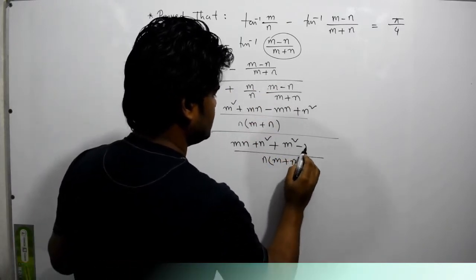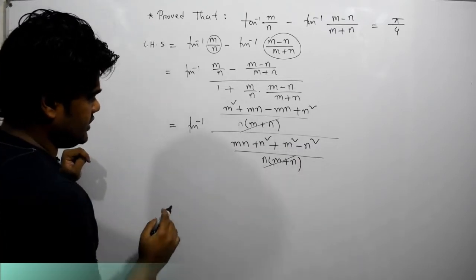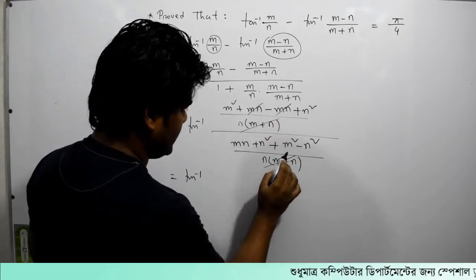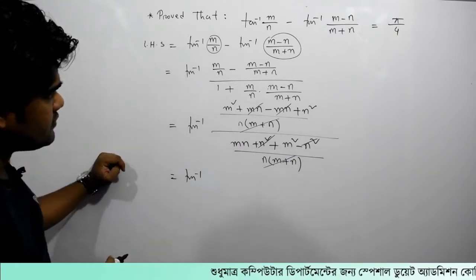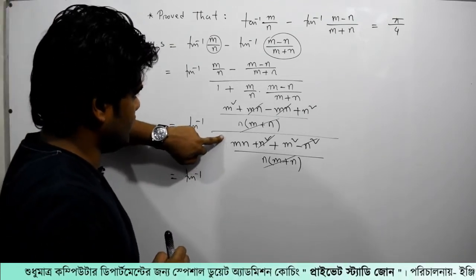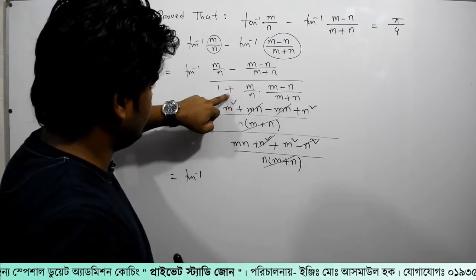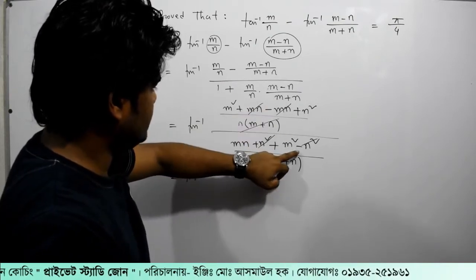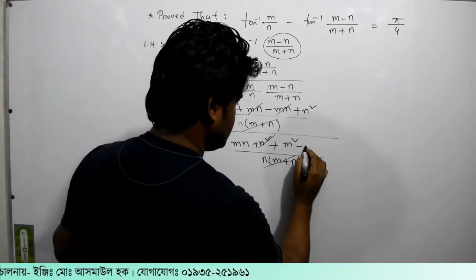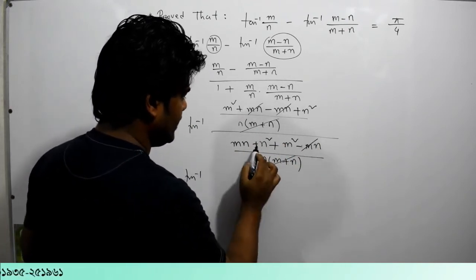We get m squared minus n squared. Let's see how much it is. So now we get the inverse, and there are n squared and n squared terms. We write n squared plus n squared — this simplifies further. We have m squared, then m·n, giving us n squared, m·n or m·n, and m squared plus n squared.